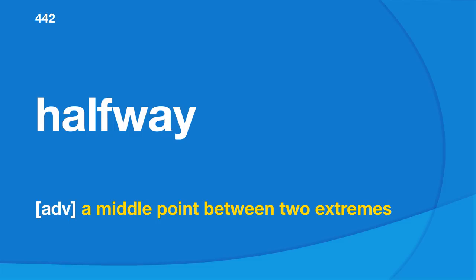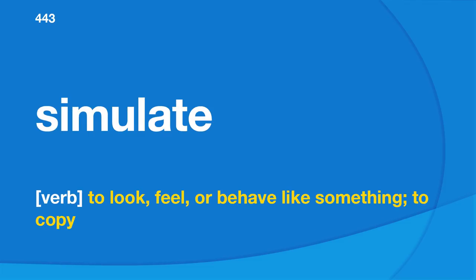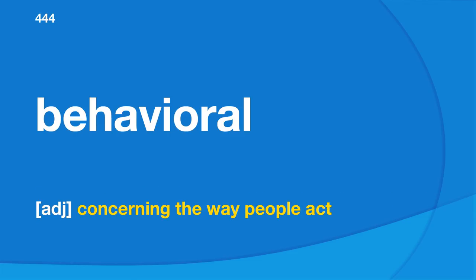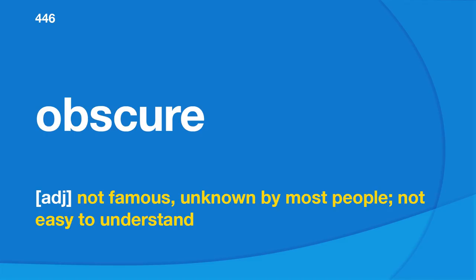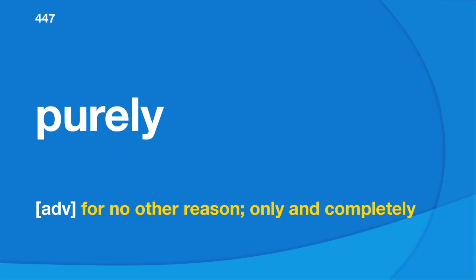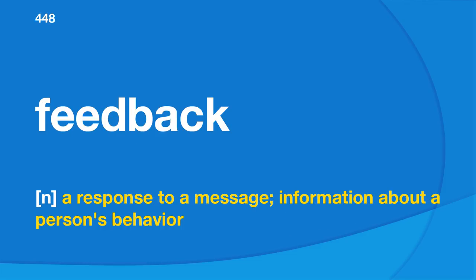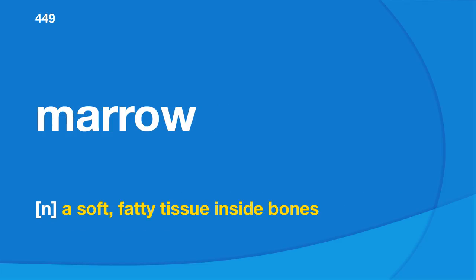Obscure: not famous, unknown by most people, not easy to understand. Purely: for no other reason, only and completely. Feedback: a response to a message; information about a person's behavior. Marrow: a soft, fatty tissue inside bones. Thumb: the short, thick finger on the side of your hand. Coordination: organizing people or things to make them work together effectively. Articulate: to express something clearly using language. Linear: made of lines.